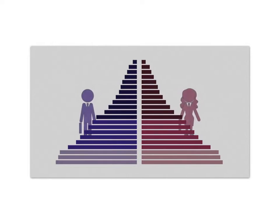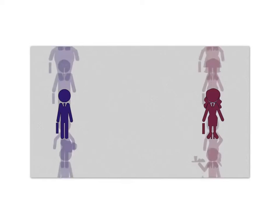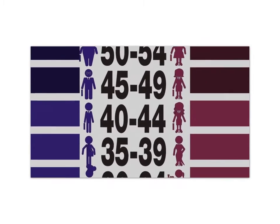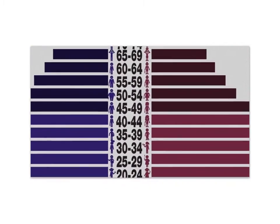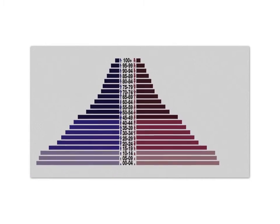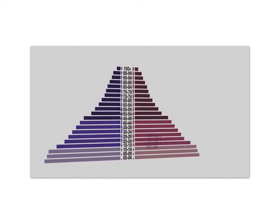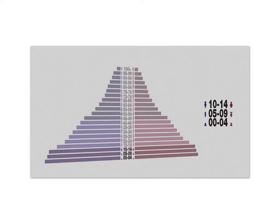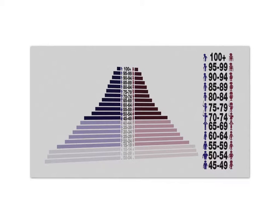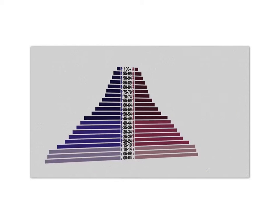In a population pyramid, data is divided by gender, with females on one side and males on the other. The population numbers are shown for each five-year age interval, starting from zero to four and continuing up to 100 and up. These intervals are grouped into pre-reproductive years (zero to 14), reproductive years (15 to 44), and post-reproductive years (45 and up). Such a population pyramid can be a powerful predictor of future population trends.